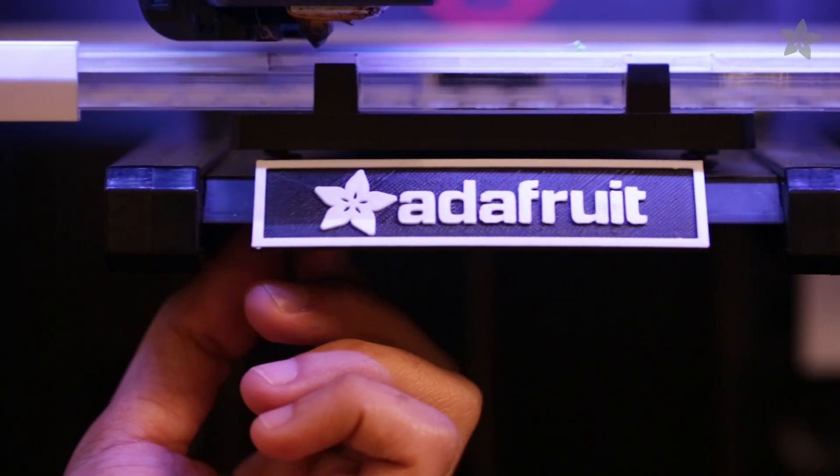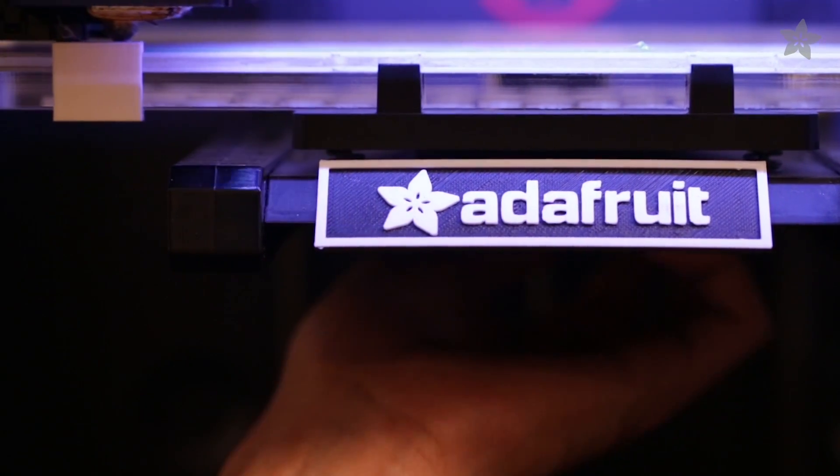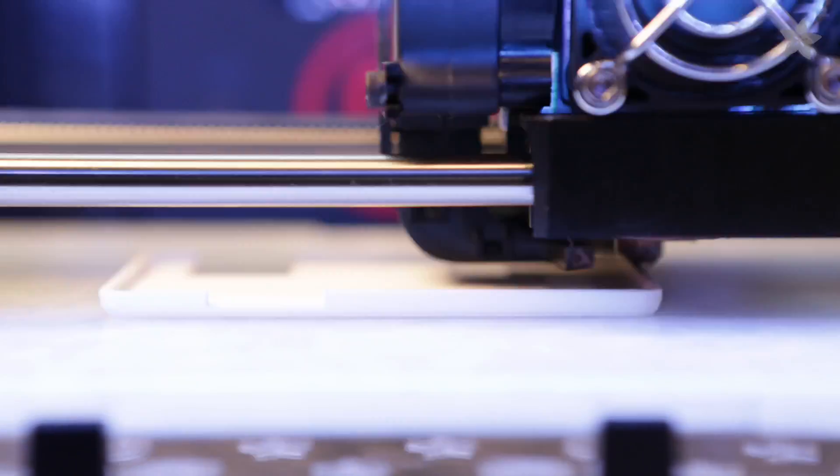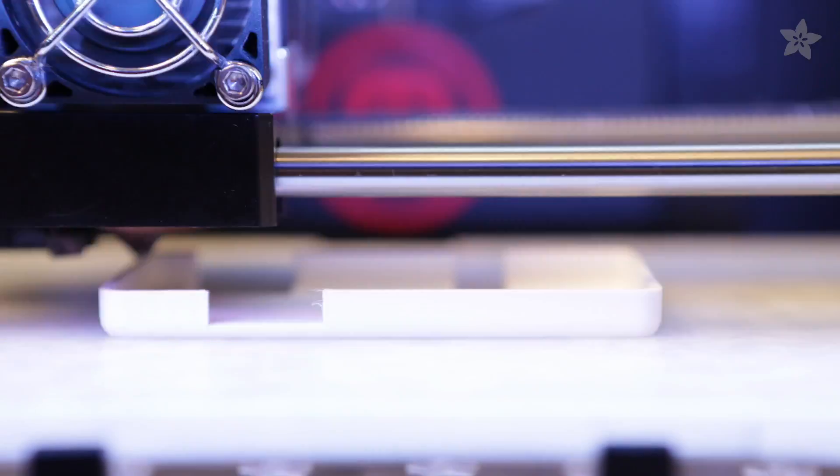You can adjust your platform by live leveling the build plate with a test print. If you're heating the platform, you can avoid warping by letting the temperature stabilize.